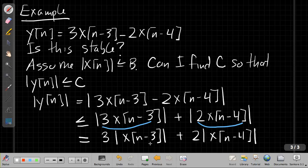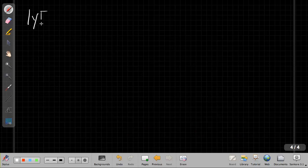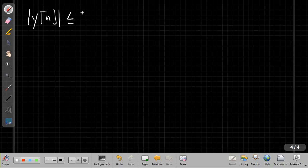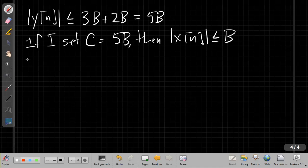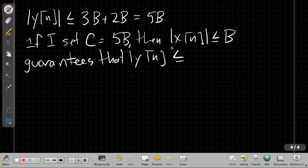And so if I go on to the next page, I can say, I know an upper bound on both of these things. X of n is always less than or equal to B. So I can say that the magnitude of y[n] is going to be less than or equal to 3 times B plus 2 times B, so that's 5B. So if I set my capital C equal to 5B, then knowing the magnitude of x[n] is less than or equal to B guarantees that the magnitude of y[n] will be less than or equal to C equal to 5B. And so there's our proof. So we've shown that this system is stable.